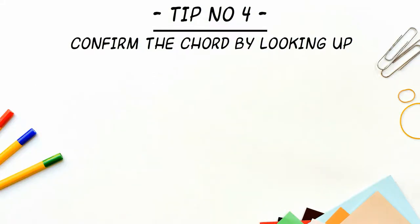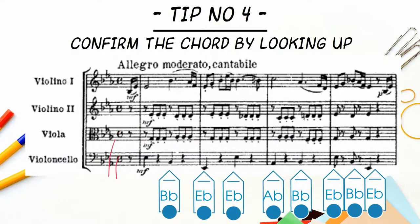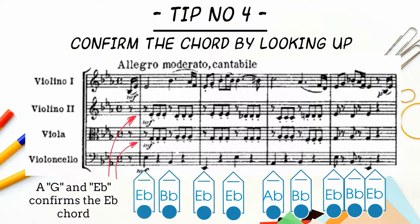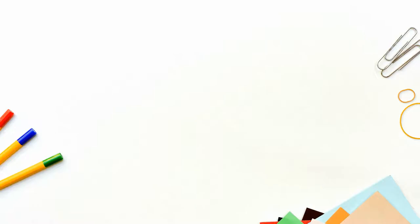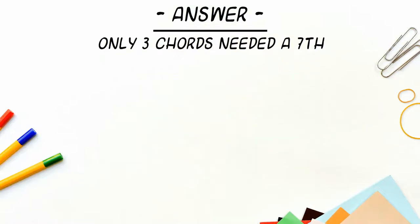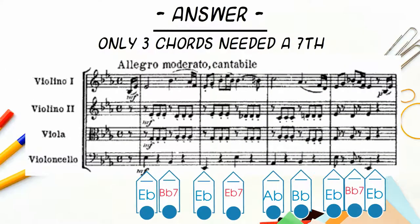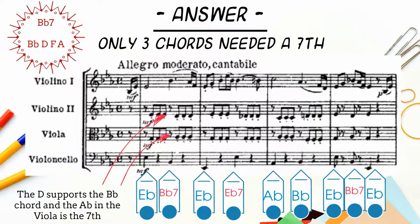Tip number four: confirm the chord by looking up into the score. Here in Haydn, the violin and viola parts have a G and an E flat, therefore confirming the first chord as being E flat. You can see in this example that we have identified three chords of the sevenths. Here in the second chord, there's an A flat in the viola part, therefore supporting the fact that the B flat chord is in fact a B flat seven.